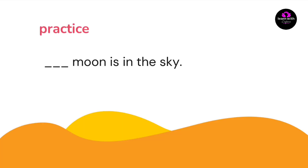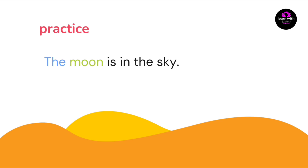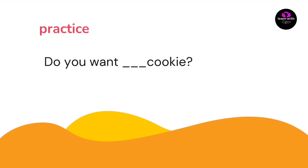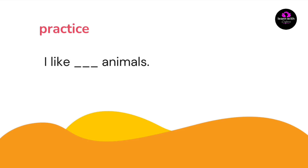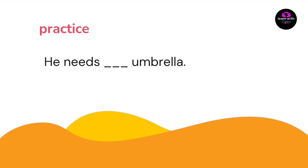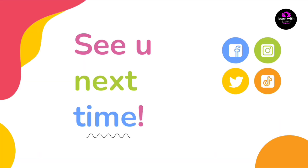الحين let's practice! خلنا نتمرن. الاول: ___ moon is in the sky — ايش الـ article؟ الاجابة: The moon is in the sky، لان القمر ما في منه الا واحد فنستعمل the. ثاني: Do you want ___ cookie? الاجابة: a cookie. ثالث: I like ___ animals — الاجابة بدون article: I like animals، لان ما حددنا. رابع: He needs ___ umbrella — الاجابة: an umbrella. وبكذا نكون وصلنا لنهاية الفيديو، see you next time! اشتركوا في القناة.